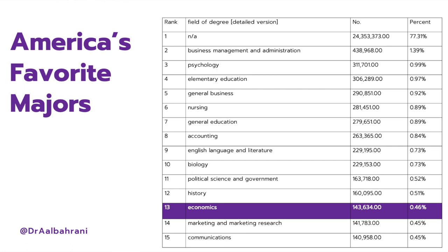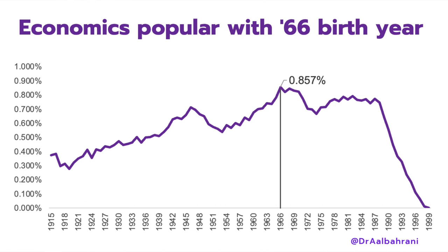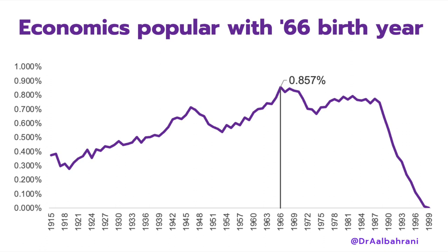Next, I looked at economics popularity across year of birth — another way of looking at age. I have data from 1915 to 1999 on the fraction of the population that majored in economics by birth year. People born in 1966 had the highest share, with 0.857% majoring in economics. Before that, the popularity of economics had been increasing, and since then it has been decreasing. If you're born in the 2000s, you're still in college, so we're not necessarily measuring the popularity of economics yet — we'll need a couple more years. But there has been a decline in the popularity of economics as a major.